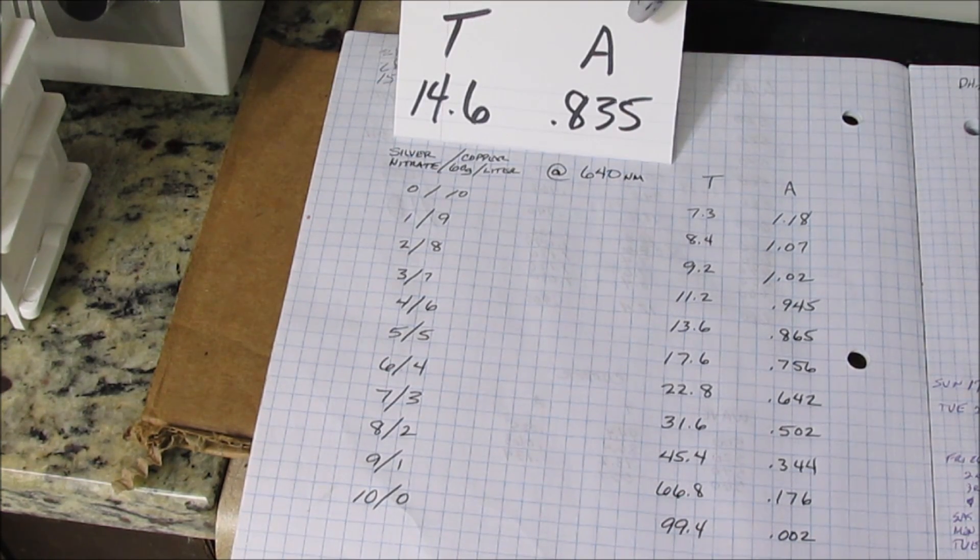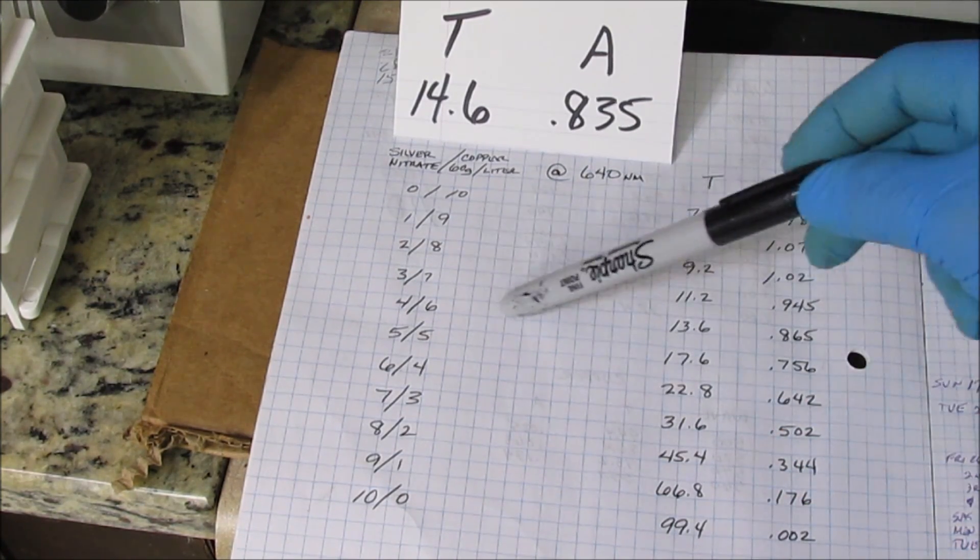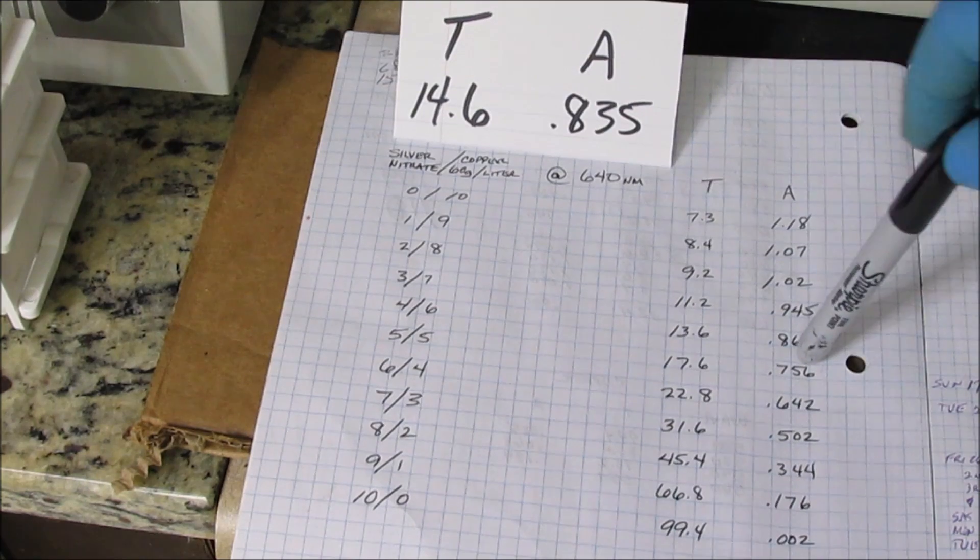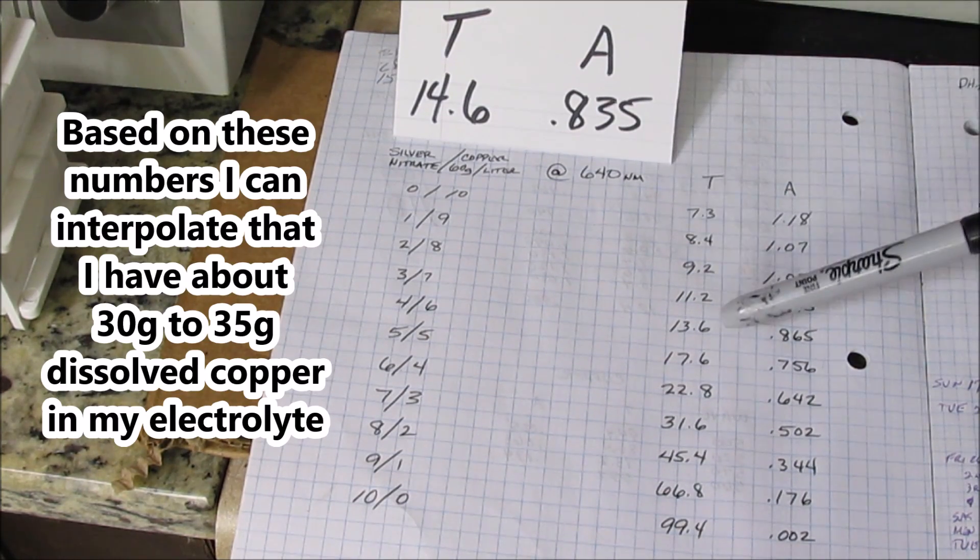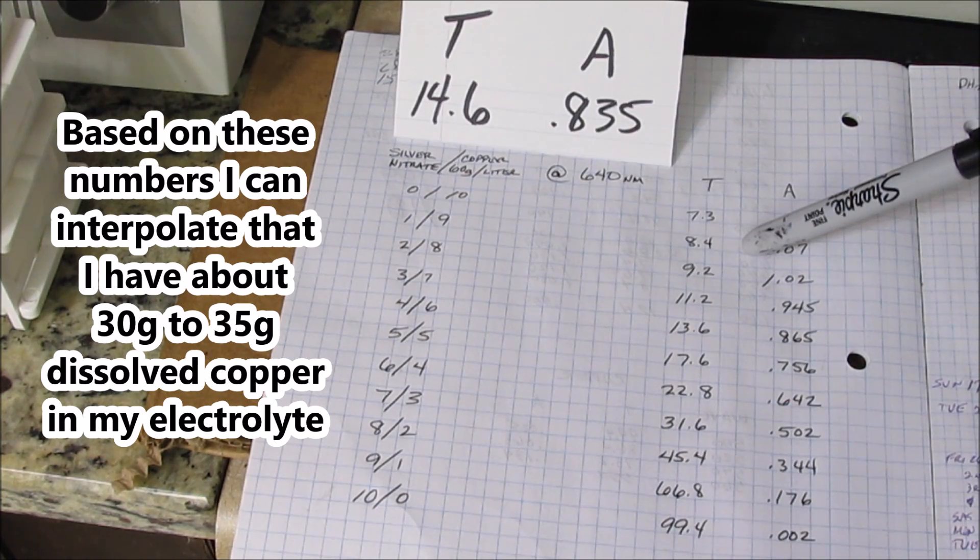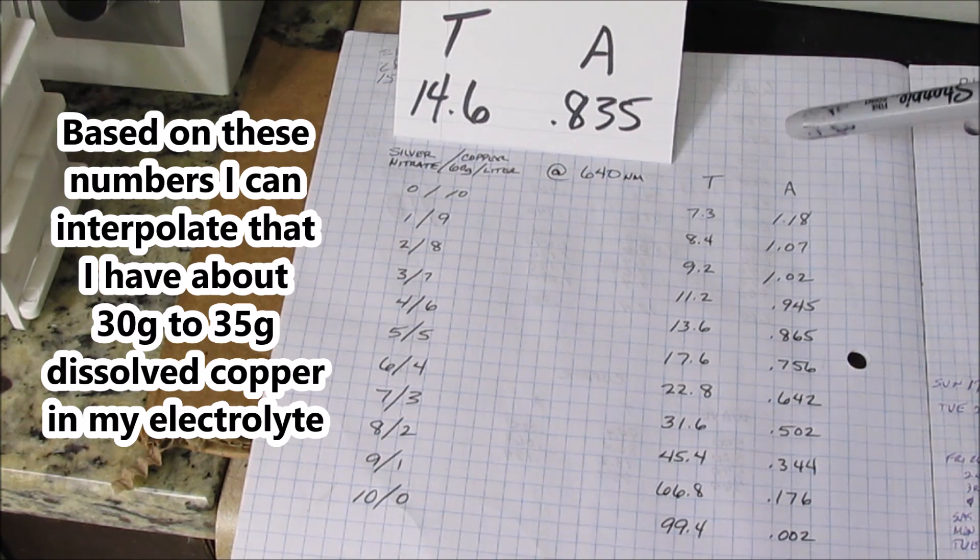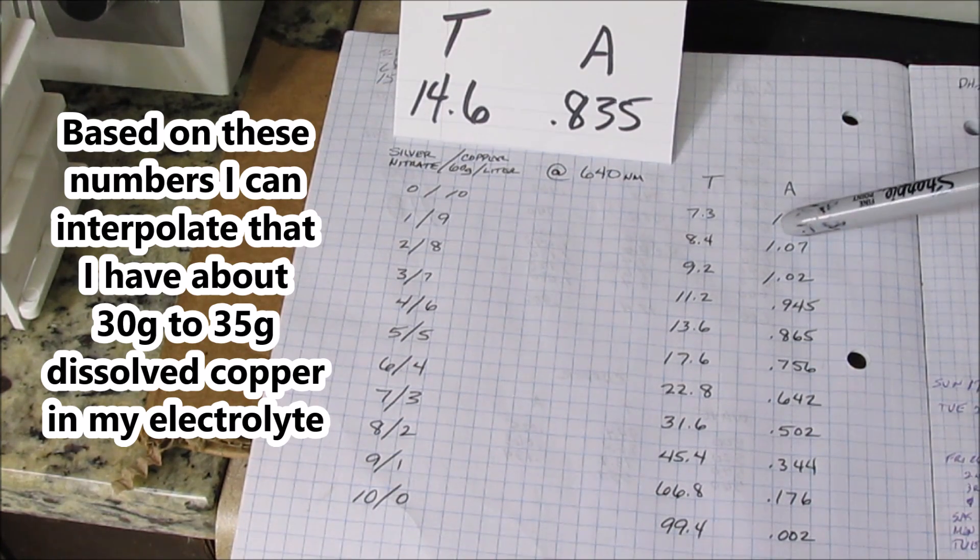Based on the results of my test that I just took, I'm right in here somewhere between 5-5 and 4-6. So I'm still good on this electrolyte. As I move up the scale here, I get higher in concentration of copper and it becomes unusable because I'm approaching the 60 gram per liter limit.